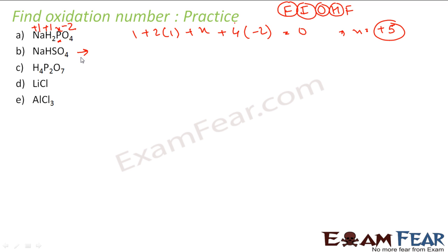Next example: NaHSO₄. We apply the same approach. Free element — we can't apply. Ion — we can't apply. Oxygen — yes, oxidation state is minus 2. Hydrogen — plus 1. I still have sodium and sulfur as unknowns.